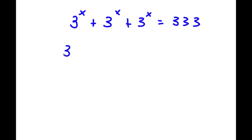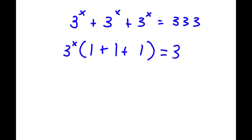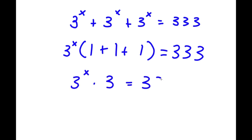So now I have 3 to the power of x times — now 3 to the power of x divided by 3 to the power of x, that's simply 1. So I have 1 plus 1 plus 1. And this is equal to 333. Now if I add what's in the parentheses, I get 3. So now I have 3 to the power of x times 3 is equal to 333.